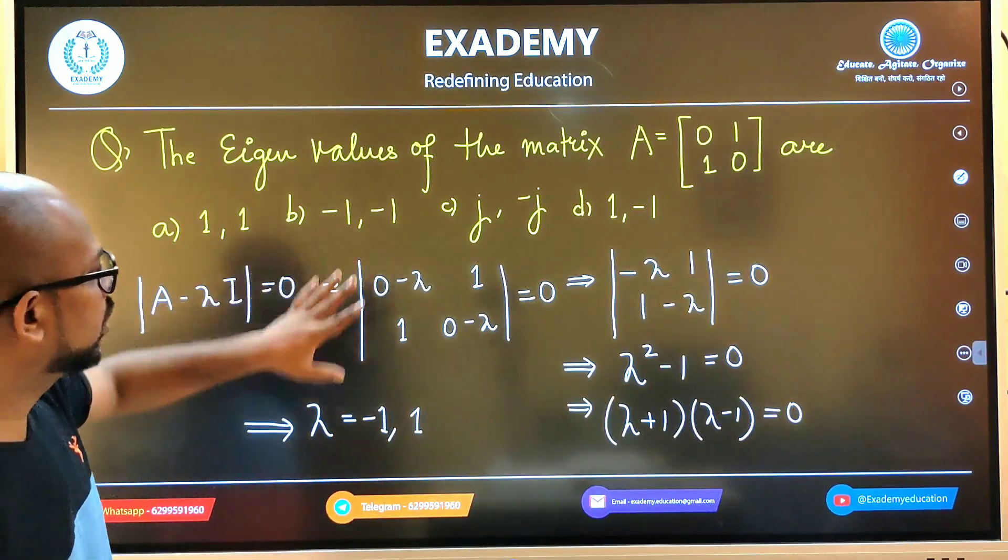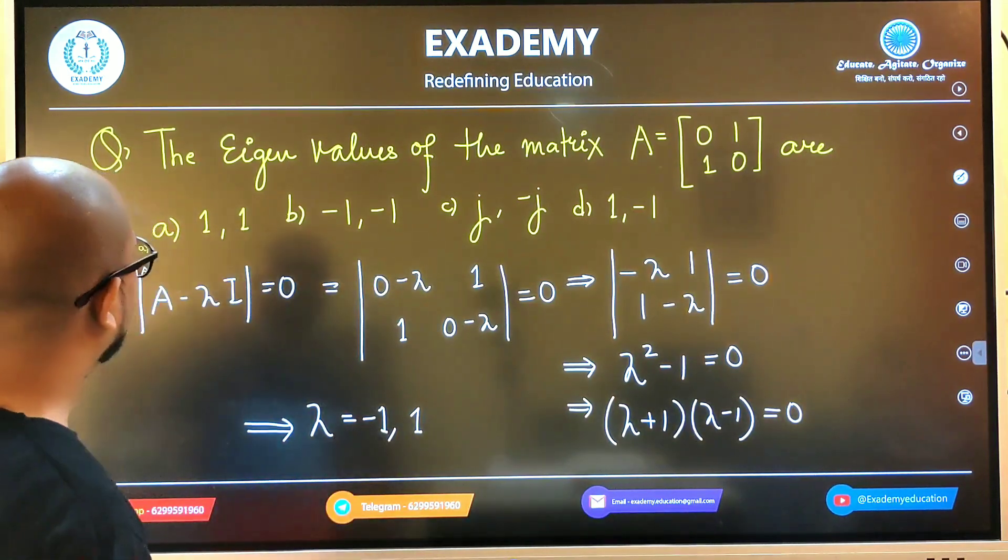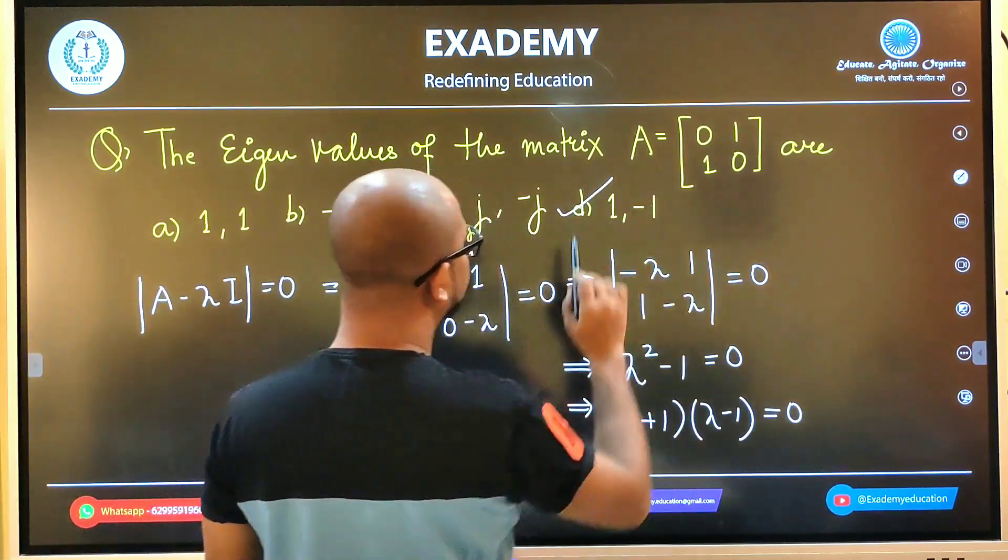So the answer is -1, 1. One eigenvalue is 1 and one is -1. So which option? Option number D is correct.